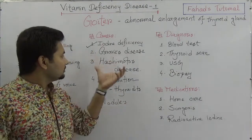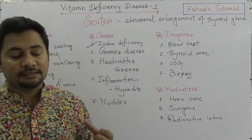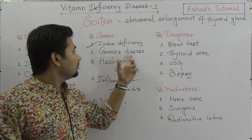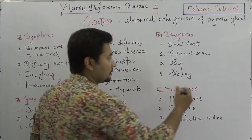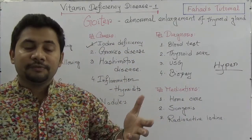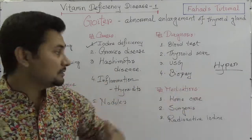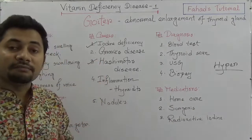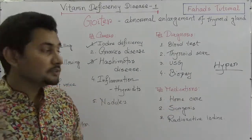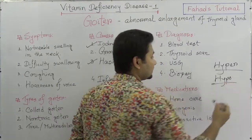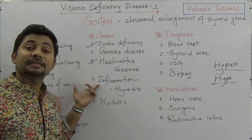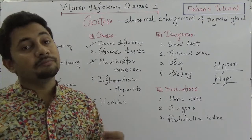The second cause is Graves' disease, where thyroid hormone production is very high, causing the gland to swell — this is called hyperthyroidism, meaning thyroid production is elevated. In Hashimoto's disease it is the reverse, where production is low — this is called hypothyroidism. Hyper means high and hypo means less. In both cases, they are causes of goiter.